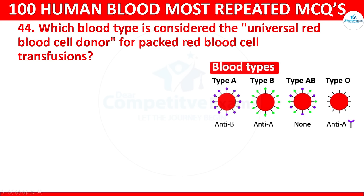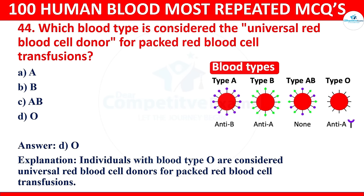Question 44: Which blood type is considered the universal red blood cell donor for packed red blood cell transfusions? Options: A, B, AB, or O. The correct answer is O. Individuals with blood type O are considered universal red blood cell donors for packed red blood cell transfusions.